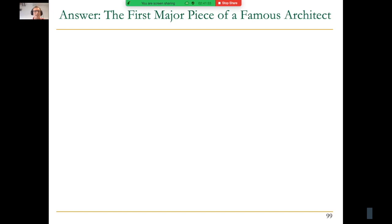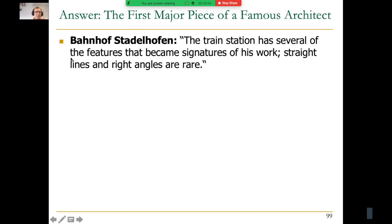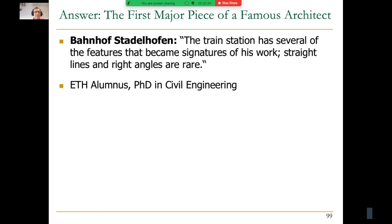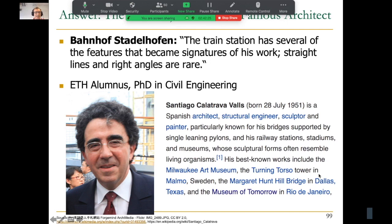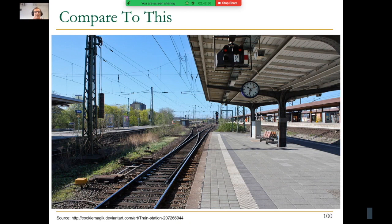It's also the first major piece of a famous architect — Santiago Calatrava. The train station has several features that became signatures of his work. Straight lines and right angles are rare; things are always bending in some way. This architect is actually an ETH alumnus with a PhD in civil engineering, and he built many things. There's a clear architectural style, and it's good to compare the uniqueness of that architecture to others.